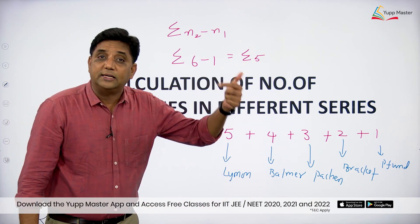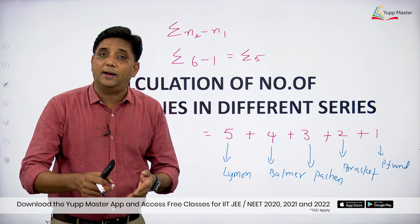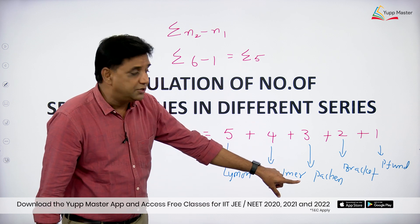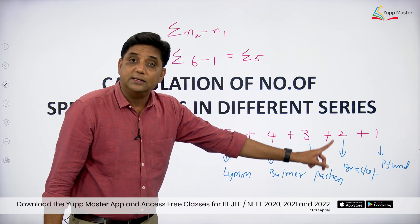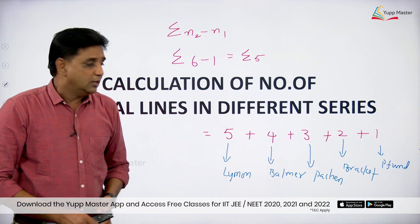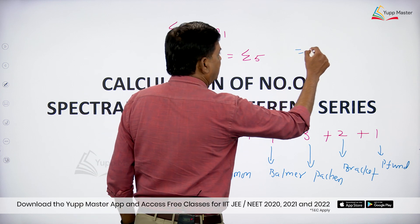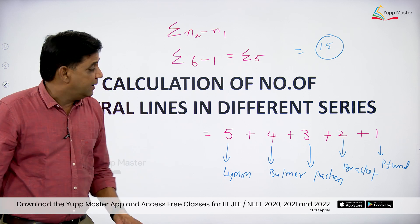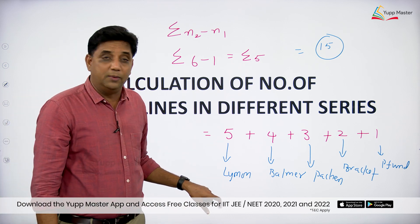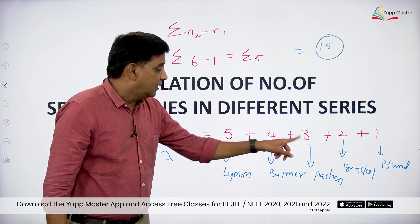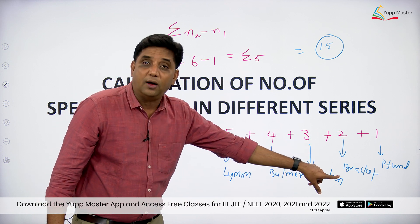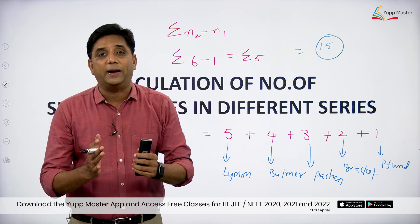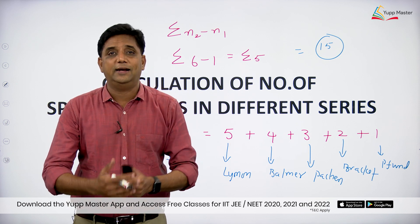So when the electron jumps from the 6th orbit to the 1st orbit, the number of spectral lines formed in each series is: Lyman series 5, Balmer series 4, Paschen series 3, Brackett series 2, and Pfund series 1. The total number of spectral lines formed is equal to 15. This is how spectral lines should be calculated in each and every series.